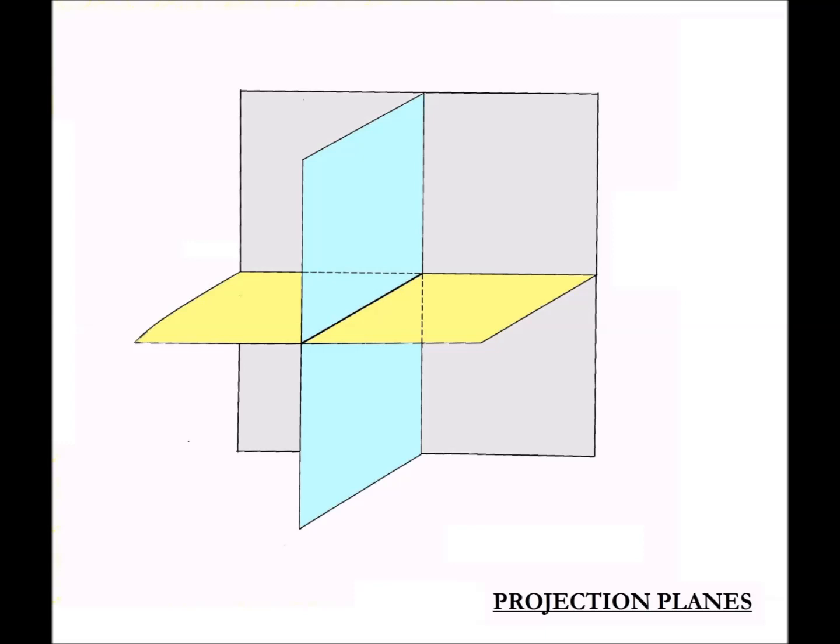They are, in order of importance, the horizontal plane, the vertical plane, and the profile plane. The horizontal and vertical planes intersect through a line, called XY line. The two lines that divide the profile plane from the other two planes are generally left unnamed.